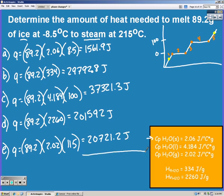Add all those up and put your answer in scientific notation, and you should get 2.91 times 10 to the 5th joules.